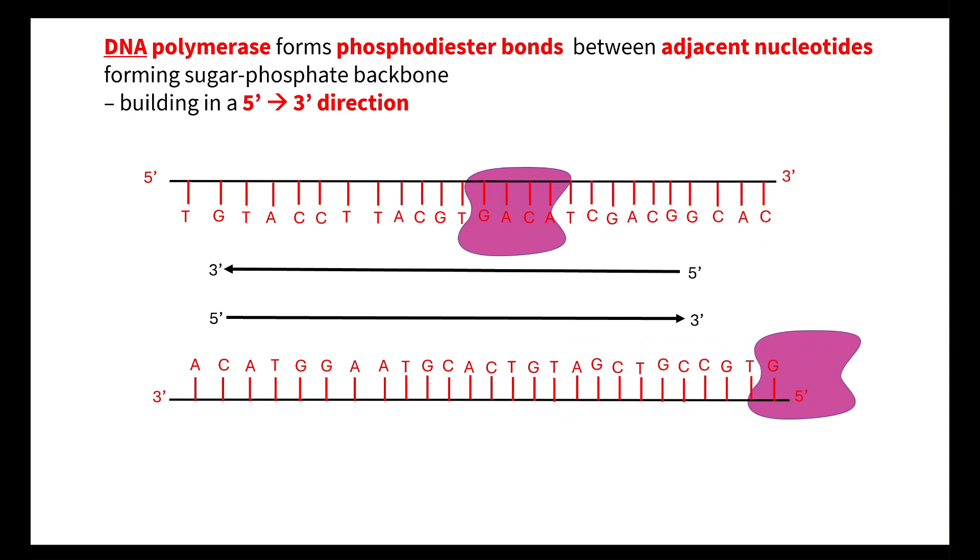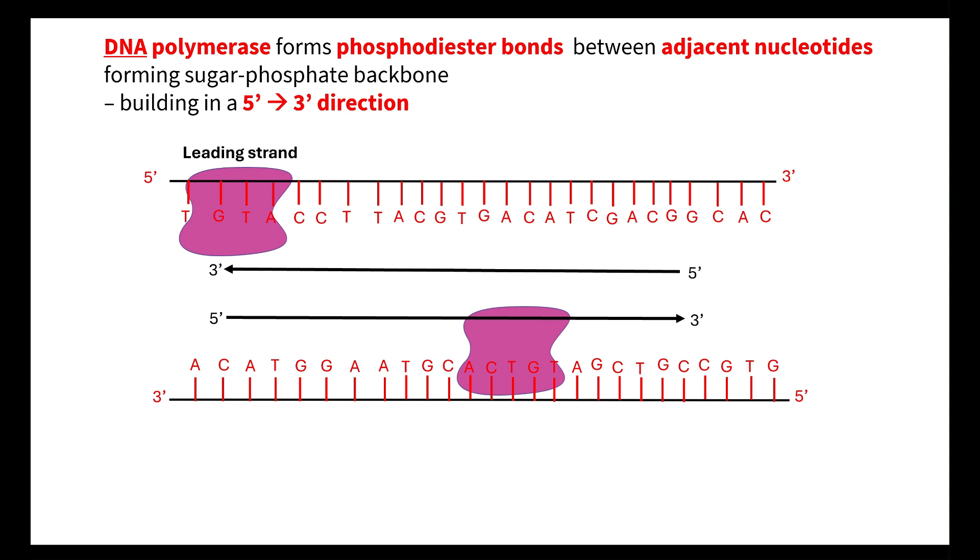You can quite clearly see that my DNA polymerase has come to the end of a strand here. What that then means is that it will release and it will have to bind again to the template strand a bit further back and work its way down. That means we have what's known as a leading strand, which is continually being built, and we have what's known as a lagging strand.